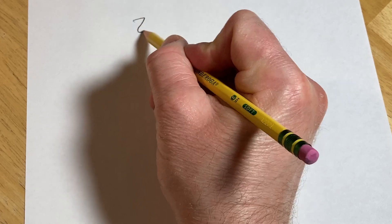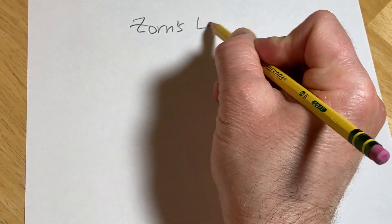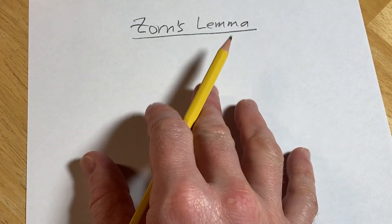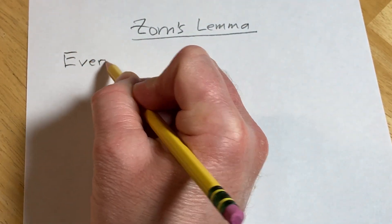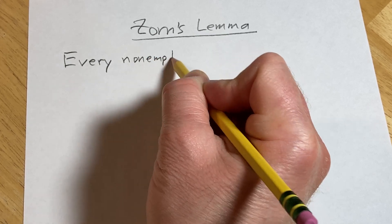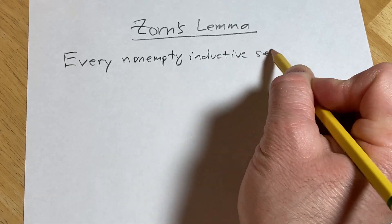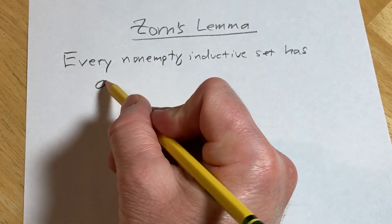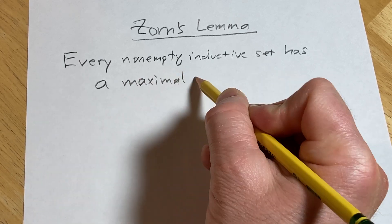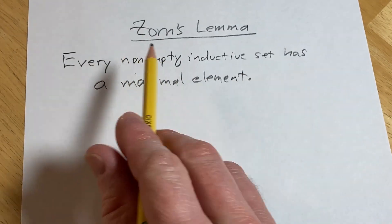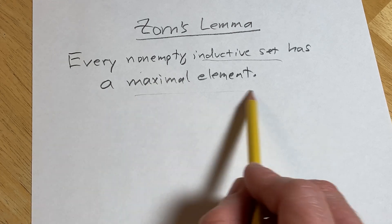Hello, in this video we are going to state Zorn's Lemma. The way I'm going to state it is going to require some background, but don't worry, we're going to go over the background, so hopefully it helps. Zorn's Lemma: every non-empty inductive set has a maximal element. So that is Zorn's Lemma. Now 'non-empty' is pretty easy — but what is an inductive set, and what is a maximal element?